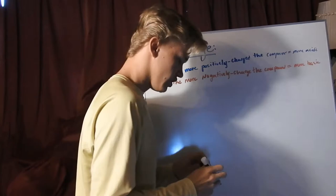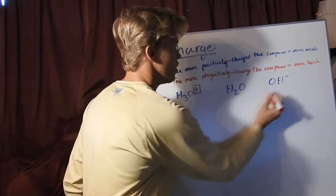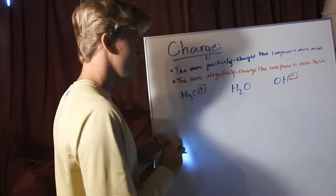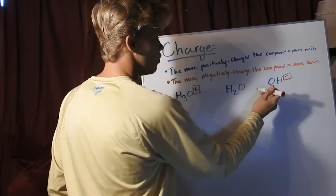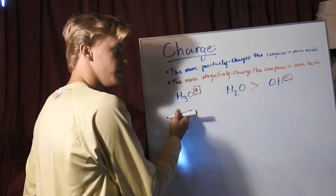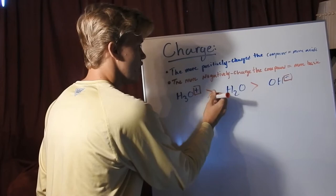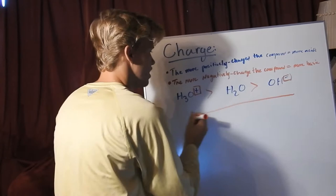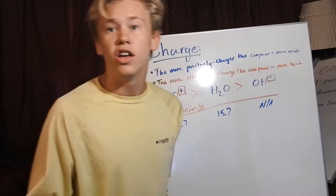When you're going over this, you can simply look at the charge on the molecule. Right here you can tell we have a positive charge on H3O+, we don't have any charge on H2O, and we have a negative charge on OH. So we can rank them in their acidity: since OH has a negative charge, it will be the least acidic. H3O+ has a positive charge, so it will be the most acidic. And H2O has no charge, so it will be in the middle.